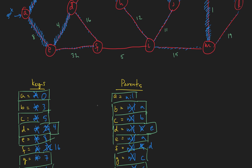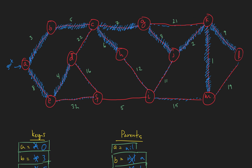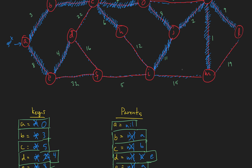We pick the next smallest key, which is I at 11. Its edge is between I and J, so we add that edge to the tree. I was the last one added, so let's check its adjacency list: F and H. H is already in the tree. F is at weight 5 from I, and 5 is less than 16, so we update F to 5 with new parent I. We're done updating our keys list.